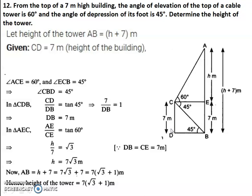This is how we apply the concept of angle of depression and parallel lines and transversal in this type of question. Now let us take tan 45. Here tan 45 equals CD by BD — opposite side by adjacent side. CD is 7, so tan 45 equals 7 by DB. Tan 45 is 1, so 7 by DB equals 1, which gives us DB equal to 7 meters.